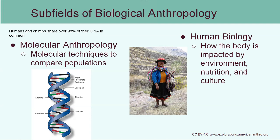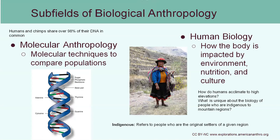Human biology is a category which studies how the human body is impacted by the environment, nutrition, and culture. This lady in the picture lives in the Andes Mountains, which are really high elevation. When you study indigenous populations — meaning those people were the original settlers of that region and have lived there for a long period of time — their genetics and biology can be influenced by their environment. What we study here is how humans acclimate to high elevations. If you live at sea level and move to the mountains, over time your body will adapt — you'll see changes in things like your red blood cells and lung capacity. That's called acclimatization. But over long periods of time in terms of evolution, we can study that by studying these indigenous people to see what's different about them compared to people who do not have ancestors from higher elevations.